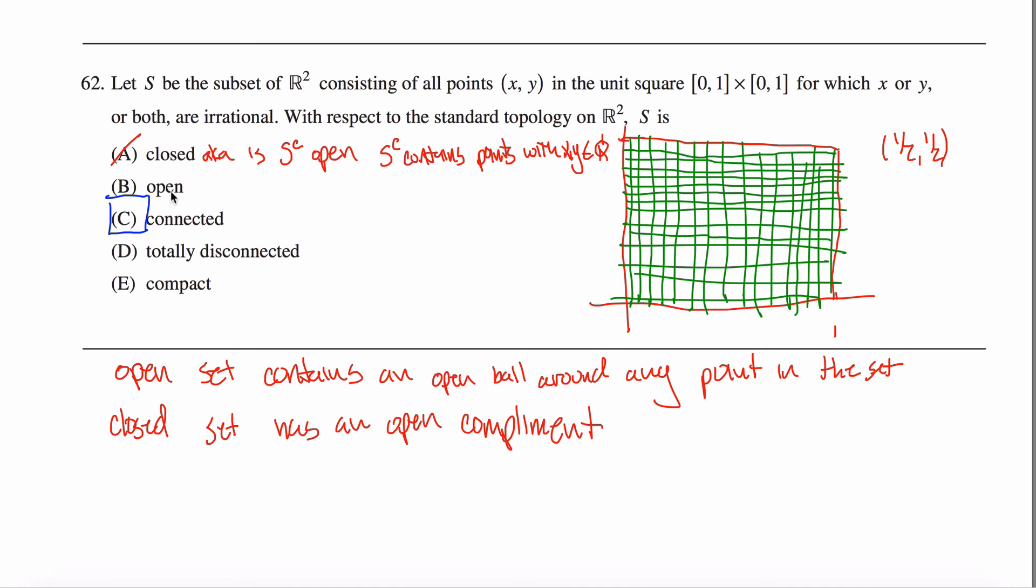Similarly, S is not open, because if I pick any point in here, I have one of the two coordinates is irrational. And an open ball around that irrational point must contain a rational point, because the rationals are dense in the reals. So kind of the same argument, this guy is not open.